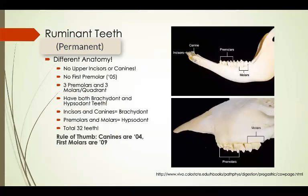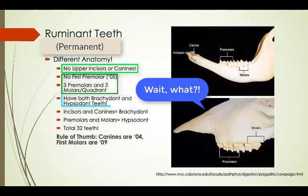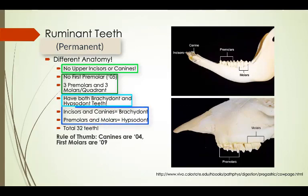Ruminants like goats and cows are unique in that they do not have upper incisors or canines. They are also unique in that they have both brachydont and hypsodont teeth — their lower incisors and canines are brachydont while their cheek teeth are hypsodont.